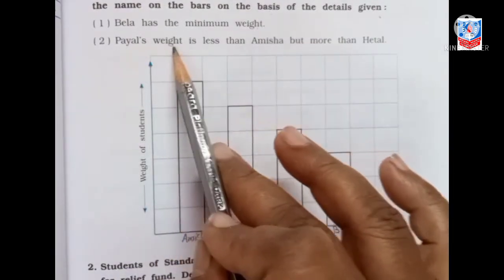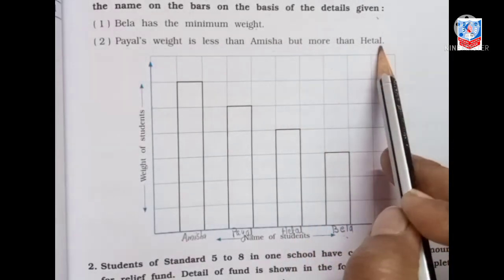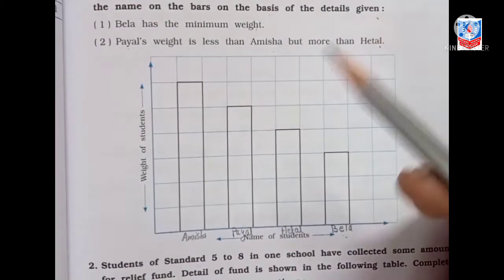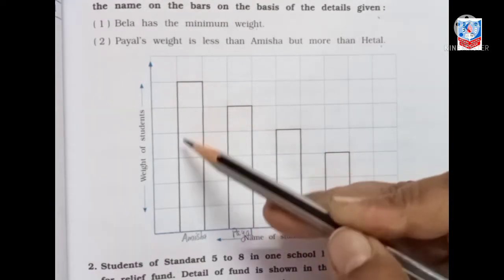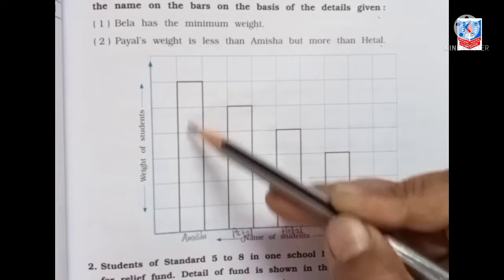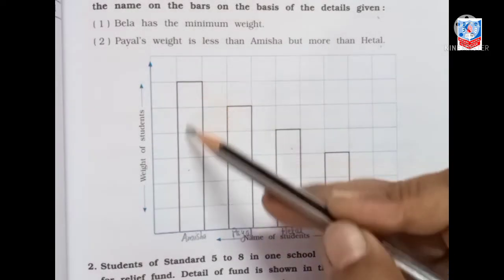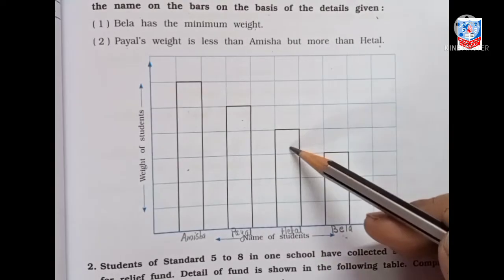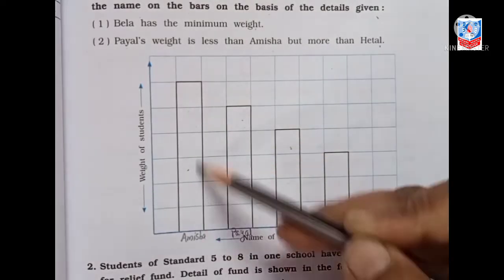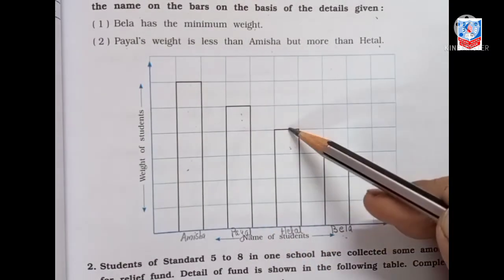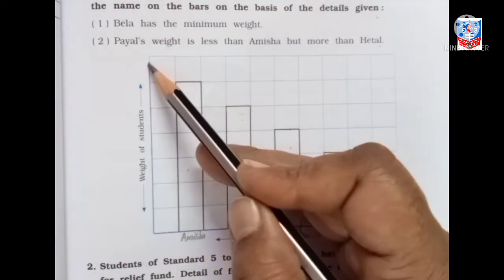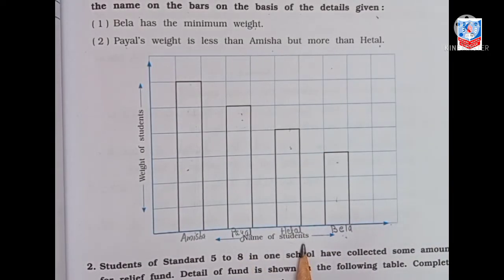Payal's weight is less than Amisha but more than Hathal. So this is Amisha — the tallest bar. Less than Amisha but more than Hathal: this is Amisha, this is Payal, this is Hathal, and this is Bela. On the X axis are the names of the students, and on the Y axis is the weight of the students. Understood?